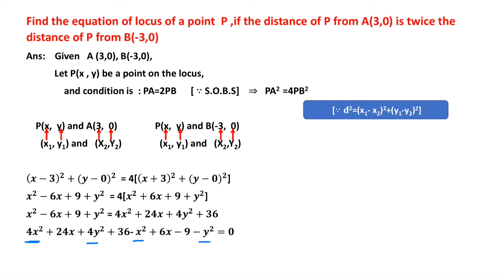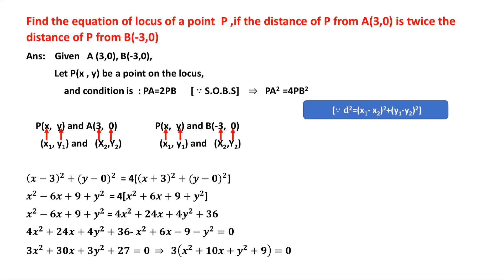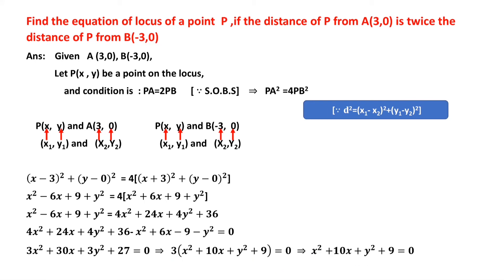We get 3x² + 30x + 3y² + 27 = 0. Since 3 is common, taking 3 out: 3(x² + 10x + y² + 9) = 0. Dividing both sides by 3, the equation of the locus is x² + 10x + y² + 9 = 0.